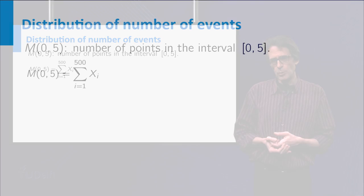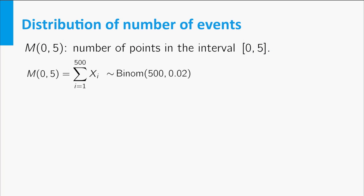We know the distribution of such a sum. It is binomial with n equals 500 and p equals 0.02. In exactly the same way the number of arrows in the whole interval (0,10) has a binomial distribution with parameters n equals 1000 and p equals 0.02. Beautiful!